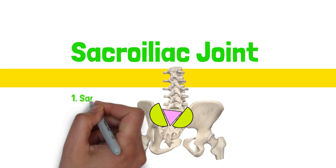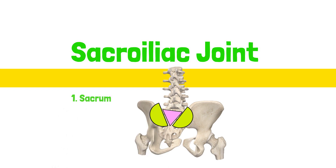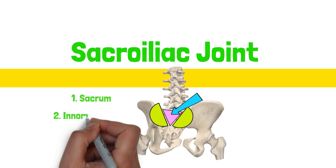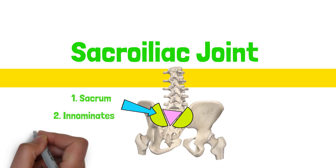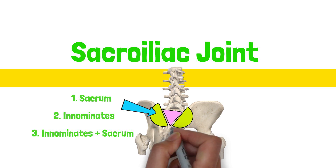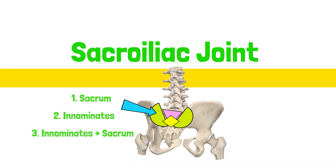First, as a movement of the sacrum independent from the movement of the innominates. Second, as a movement of the innominates independent from the sacral motion. And last, as a movement of both parts simultaneously — the sacrum and the innominates moving together.